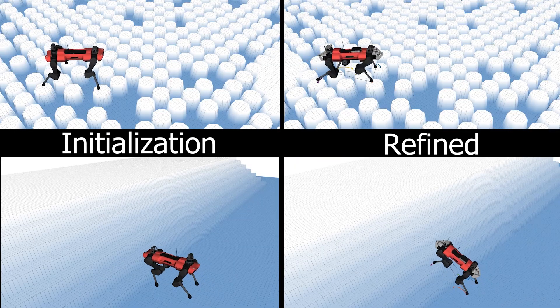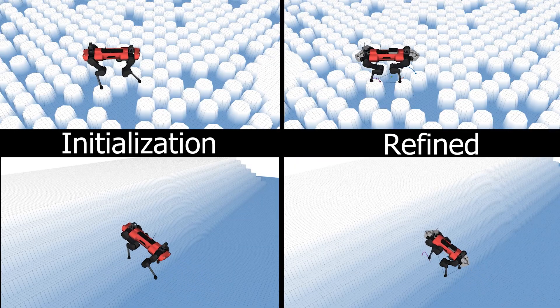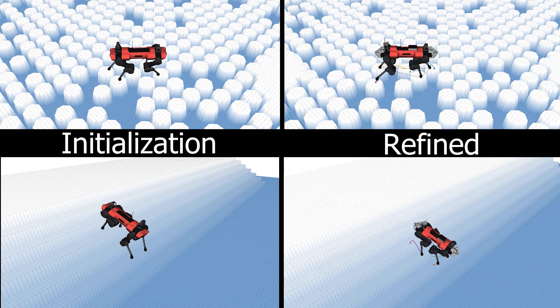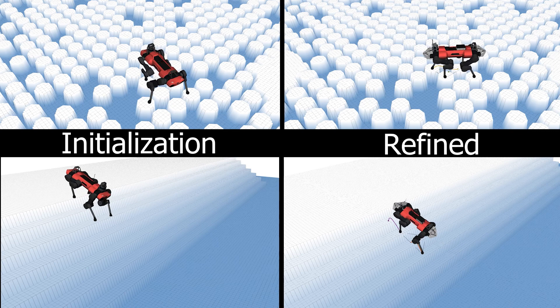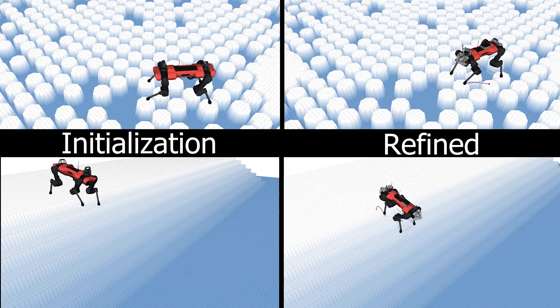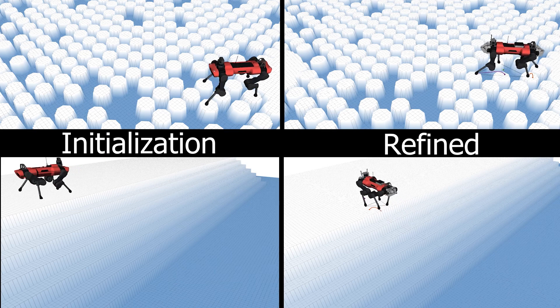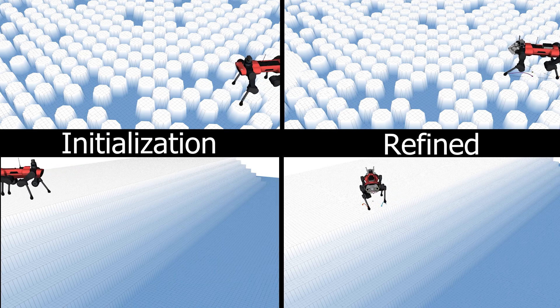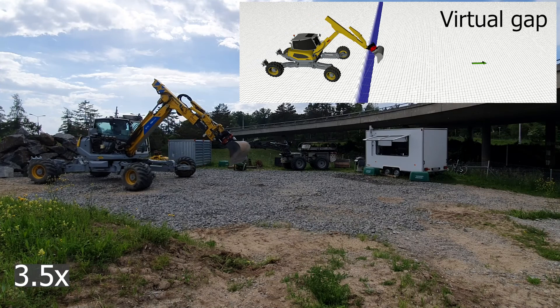Discovering a feasible contact schedule in complex terrain using trajectory optimization is difficult. Furthermore, because the problem is heavily non-convex, a naive initial guess such as linear interpolation to the goal point gets stuck in bad minima. Our two-stage algorithm alleviates this problem. Initializations computed using our RRT planner are much closer to the feasible solution and the optimization does not get stuck.